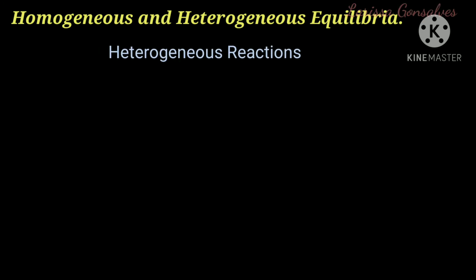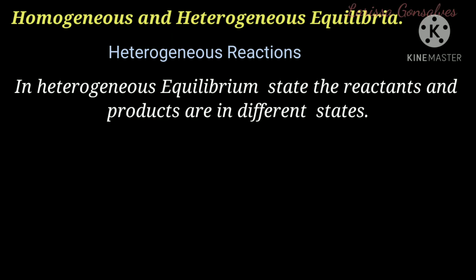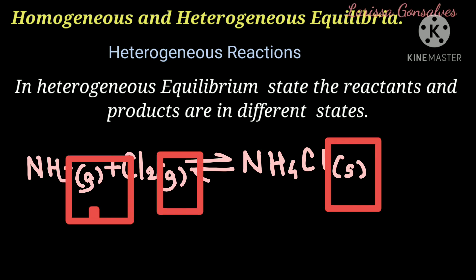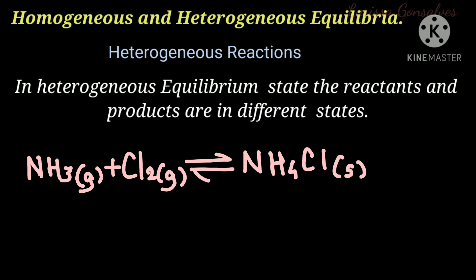The term 'hetero' means two or more different phases. Hence a heterogeneous equilibrium involves a reversible reaction in which the reactants and products are in different states. For example, ammonia in gaseous state reacts with chlorine in gaseous state to produce ammonium chloride in solid state. Since the states are gas, gas, and solid — they differ — and hence it is a heterogeneous reaction.